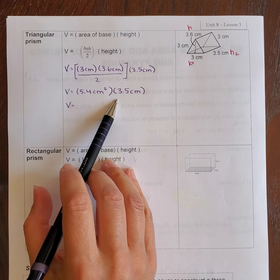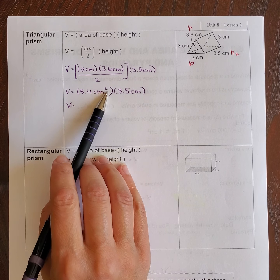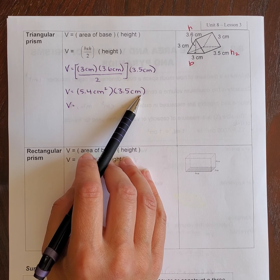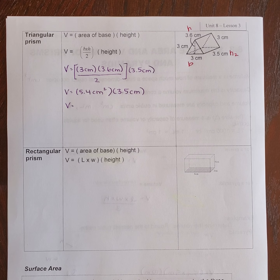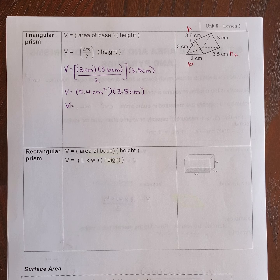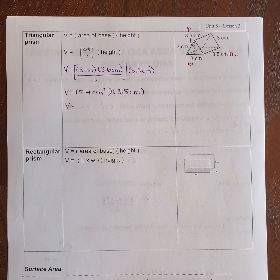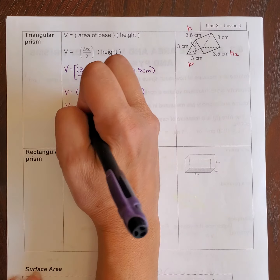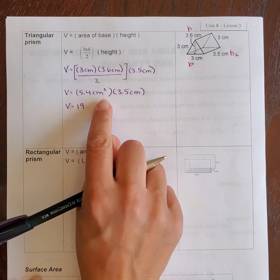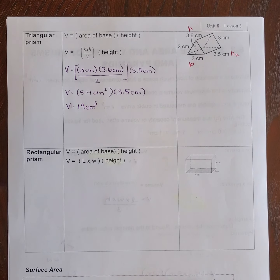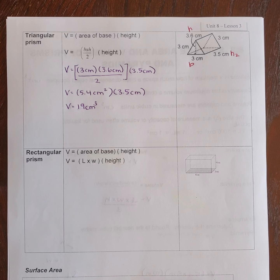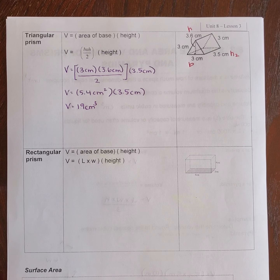Then I multiply 5.4 centimeters squared by 3.5 centimeters, which converts to centimeters cubed — centimeters squared times centimeters, adding exponents 2 plus 1 equals 3. So 5.4 times 3.5 equals 18.9, which rounds to 19 centimeters cubed. The volume of the triangular prism is 19 centimeters cubed.